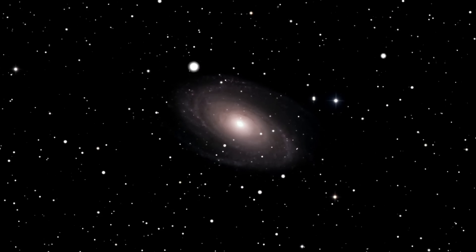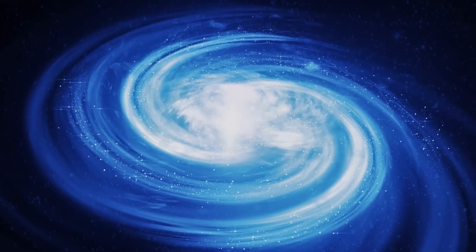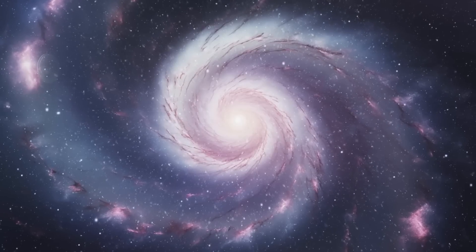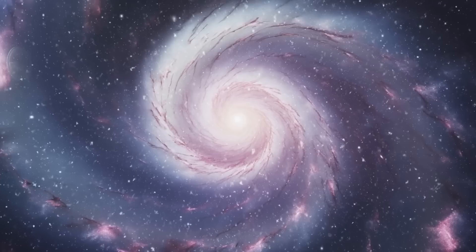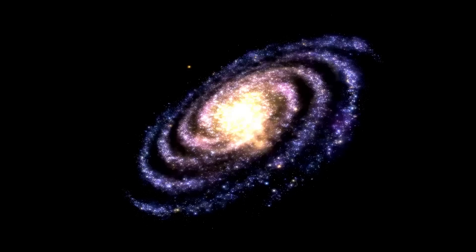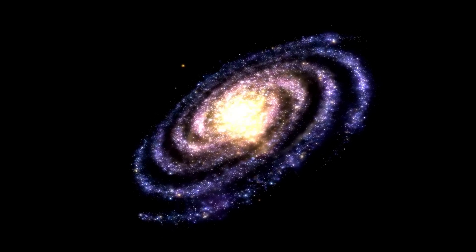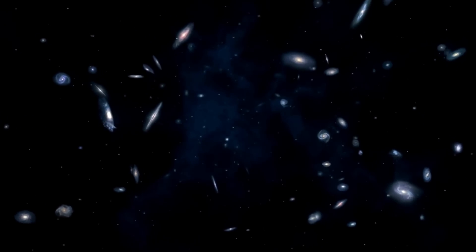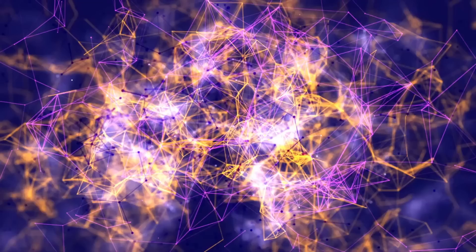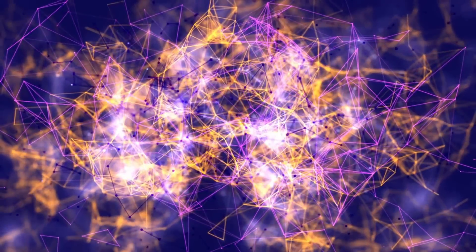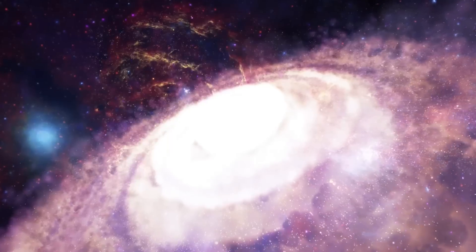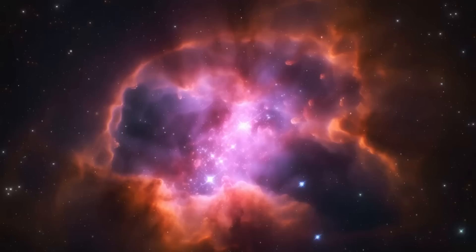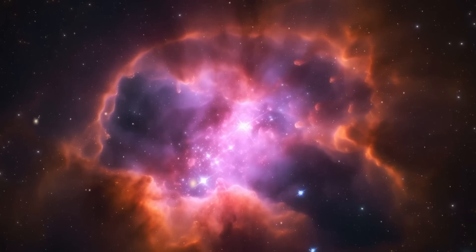The James Webb Space Telescope, JWST, has not only revolutionized our understanding of early galaxies but has also opened new avenues for exploring fundamental questions in cosmology. Its infrared capabilities allow it to peer deeper into the universe than ever before, capturing light from some of the earliest galaxies formed just 300 million years after the Big Bang. These observations have challenged the conventional wisdom about galaxy formation, suggesting that early galaxies were not just simple young structures but were surprisingly mature, containing heavy elements and harboring supermassive black holes at their cores. This discrepancy between theory and observation raises profound questions about the mechanisms driving galaxy evolution in the early universe. It hints at processes that were perhaps more rapid and efficient than previously thought, leading to the formation of galaxies with unexpectedly complex structures so soon after the Big Bang.